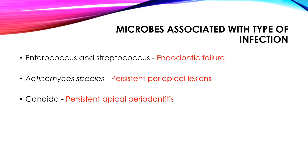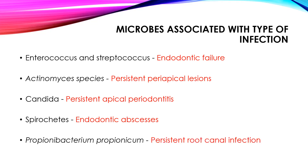In persistent apical periodontitis, the fungal microorganism is Candida. In cases of abscess, one will be able to isolate spirochetes such as Treponema. In persistent root canal infection, you will be able to see Propionibacterium propionicum.